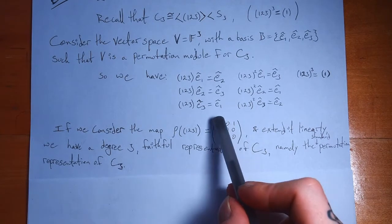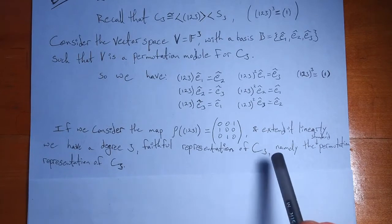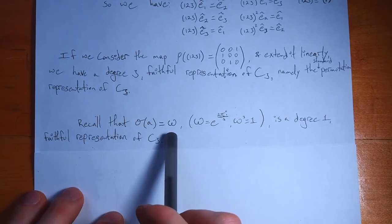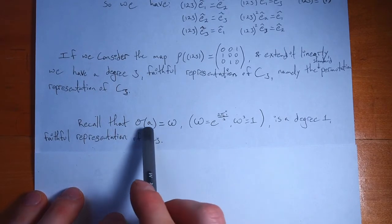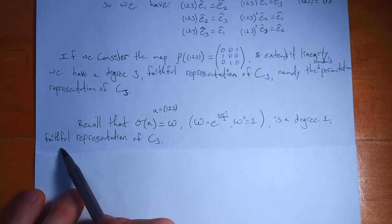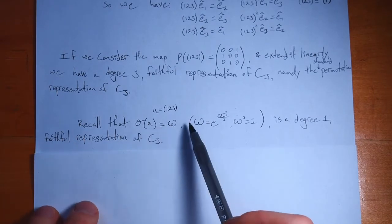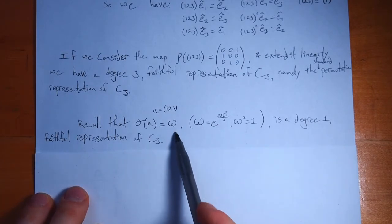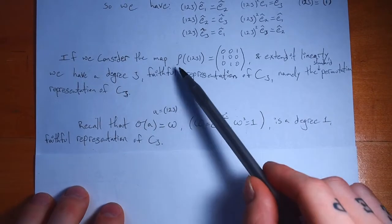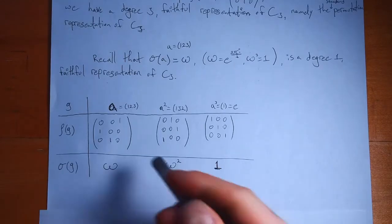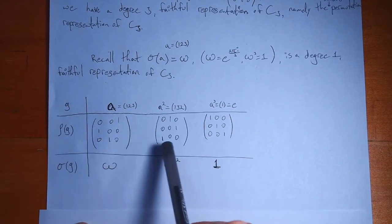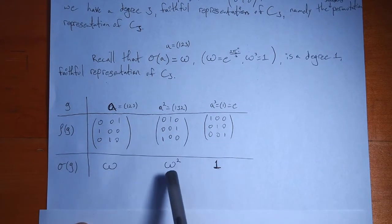So we have a degree-3 representation using 3×3 matrices with the standard basis. We could pick another basis. In the video on cyclic representations, I showed that you can look at roots of unity — in this case, the third root of unity ω. Another representation sends the generator a to ω, which is a degree-1 faithful representation. Comparing them in a table: a maps to (1,2,3), a² maps to (1,3,2), a³ is the identity; and in the degree-1 representation, we get ω, ω², and 1. The degree-1 representation is nicer to work with, but it's not a permutation matrix.